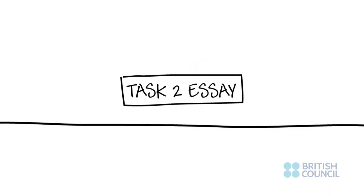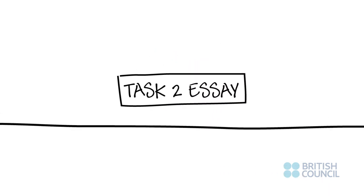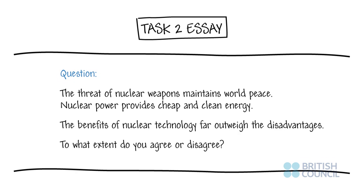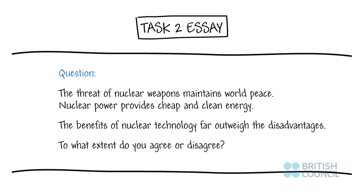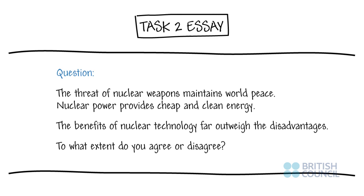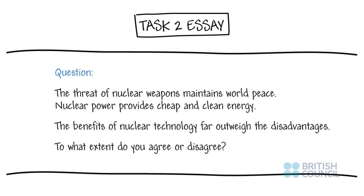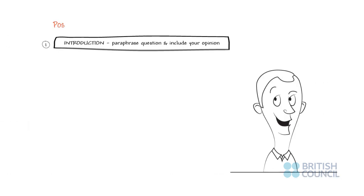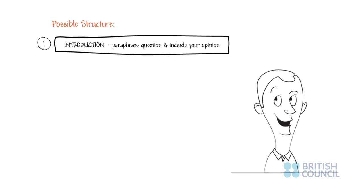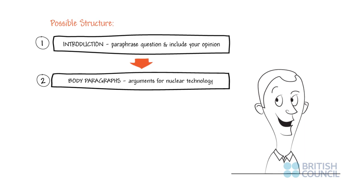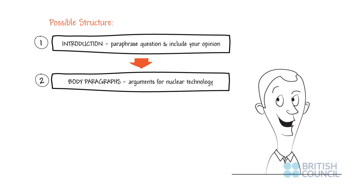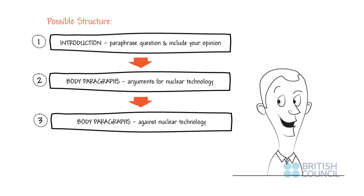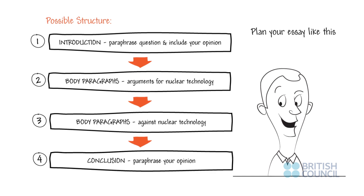Here is one simple way to sequence ideas for effective coherence for a Task 2 essay. For example: 'The threat of nuclear weapons maintains world peace. Nuclear power provides cheap and clean energy. The benefits of nuclear technology far outweigh the disadvantages. To what extent do you agree or disagree?' Introduction: paraphrase the question and include your opinion. Body paragraphs: arguments for nuclear technology. Body paragraphs: against nuclear technology. Conclusion: paraphrase your opinion.